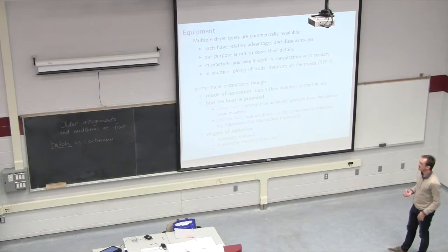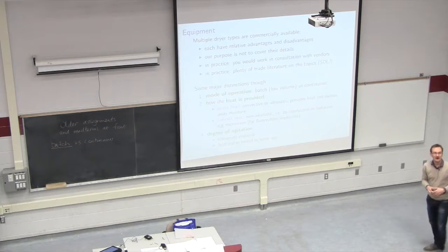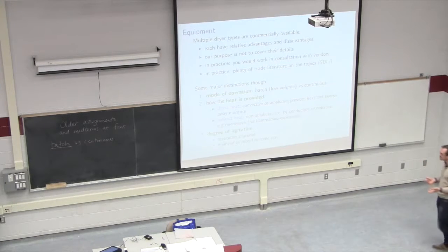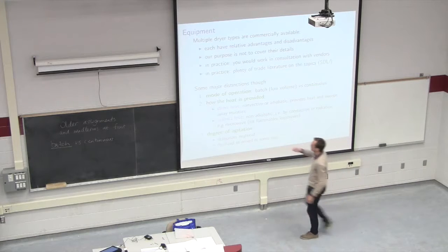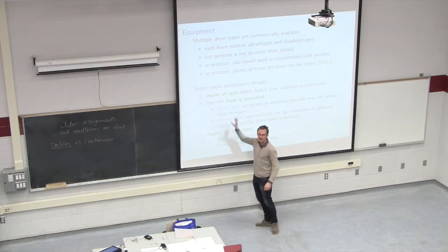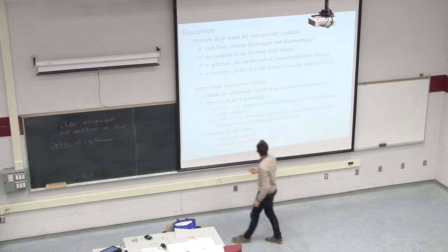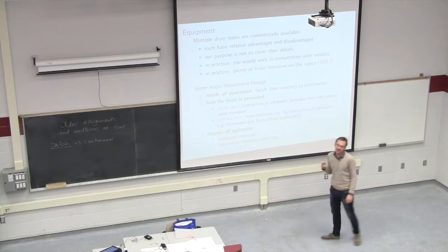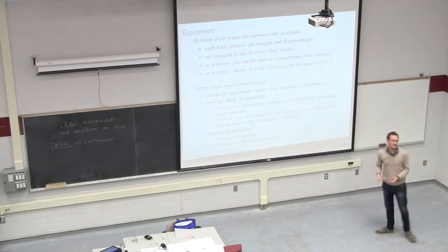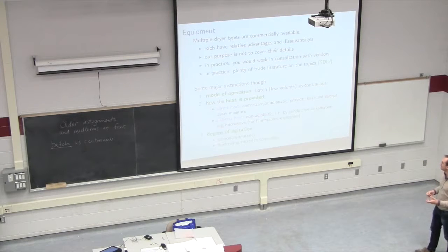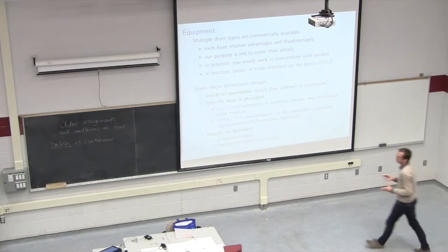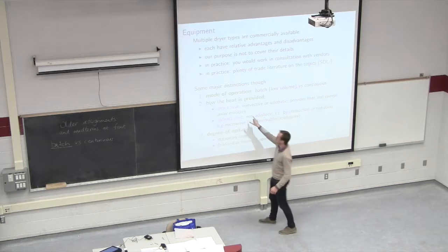The second way we can divide up the equipment is by how the heat is supplied. So most commonly we will use direct heat in the form of hot air. And that's providing convection through the device. By large margin, this is the most common form of dryer.